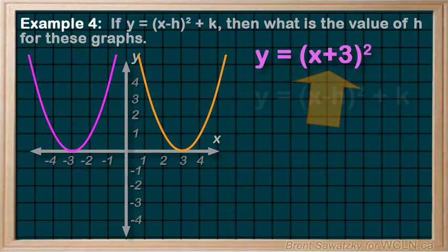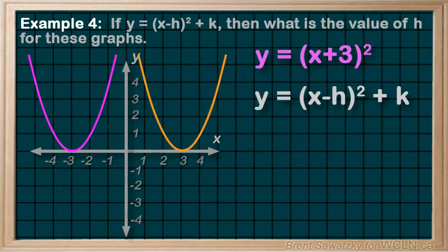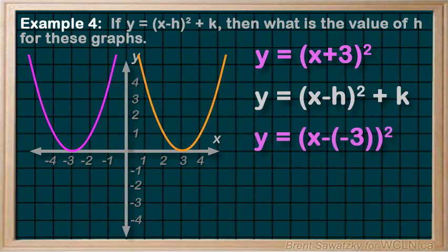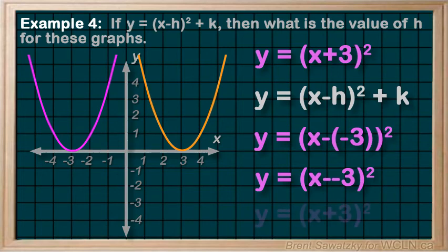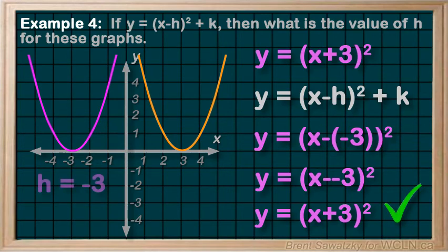Now, given our equation here, what is the value of h that results in x plus 3 within these brackets? Well, we know that two negatives together creates a positive. So if we were to put an h of negative 3 in there, then we would have minus negative 3. And we can replace those two negatives with a positive, and the result is x plus 3. Exactly what we wanted. So an h equals negative 3 makes it work perfect.